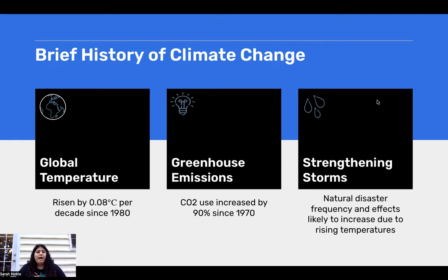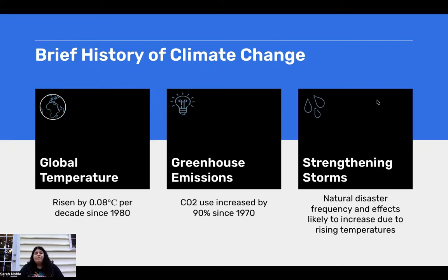Our CO2 use is still increasing even though the boom started in the industrial revolution. All of those emissions from the carbon dioxide that we're using is going into the atmosphere and trapping that excess heat in. So if you take global temperature and greenhouse emissions and combine them, you're going to get strengthening storms. Natural disaster frequency and effects are likely to increase and have increased due to rising temperatures. Think about all of these super storms we're having — we had so many named tropical storms and hurricanes that we went through the entire English alphabet and had to use the Greek alphabet.